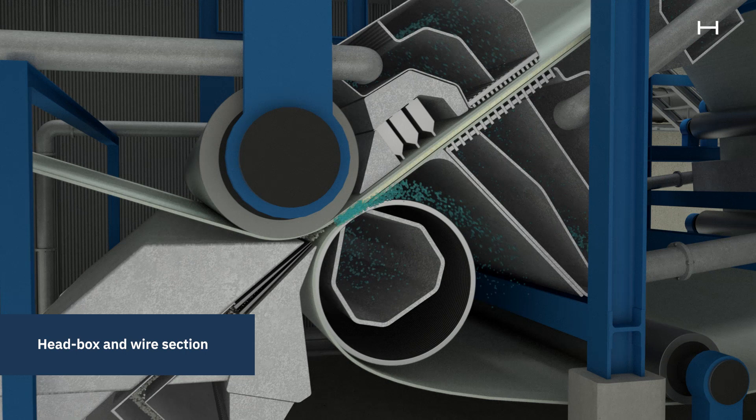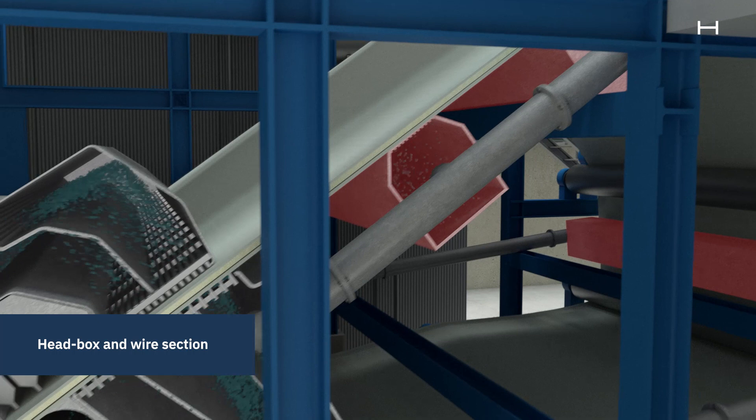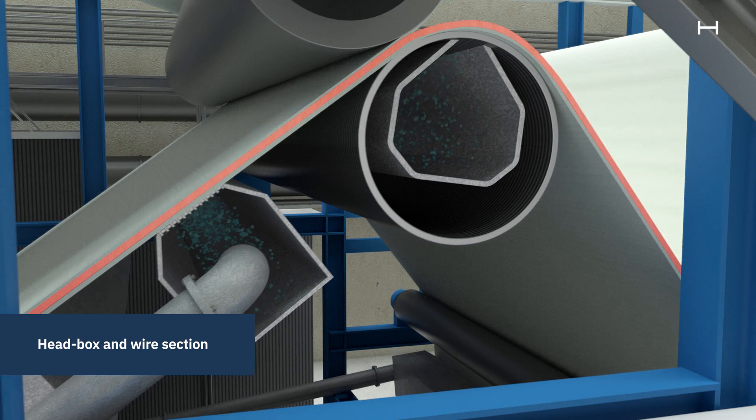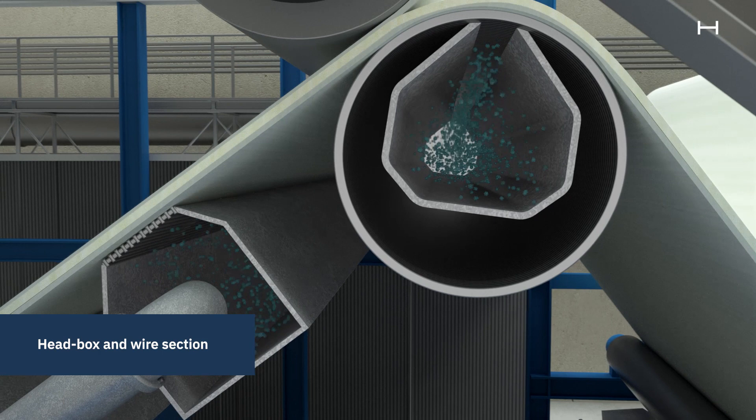The wire section consists of a bottom wire and a top wire and there are multiple suction boxes which help to reduce the water from the pulp. The fibers stay on the surface of the fabrics while the water is drained through. About 3,300 tonnes of water is removed every hour.